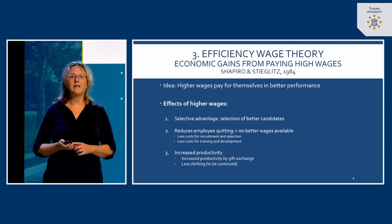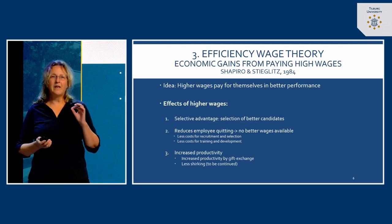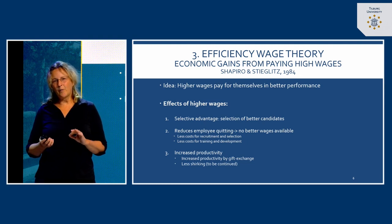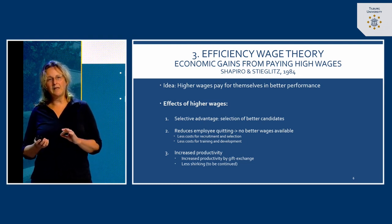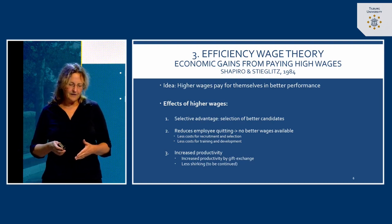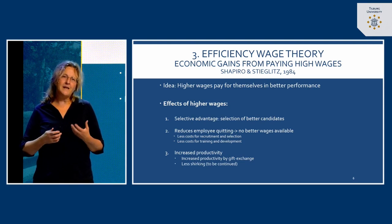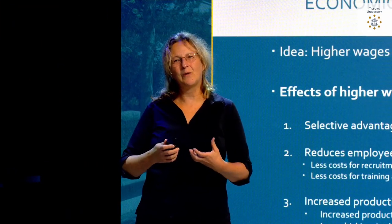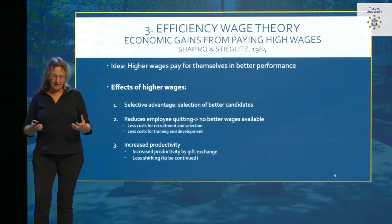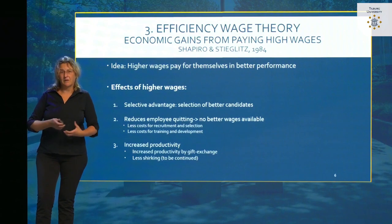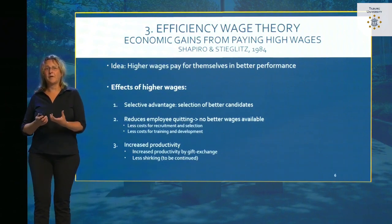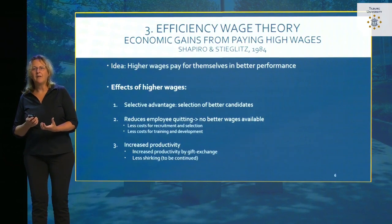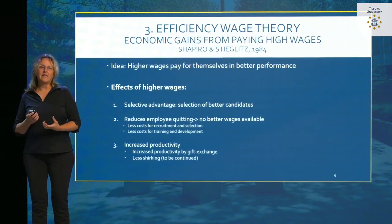Moving on to the next theory: efficiency wage theory, developed by Shapiro and Stiglis in 1984. They started thinking about what frictions and unemployment could mean for individual organizations, reasoning that the fear of being unemployed is a source of motivation that can help organizations be more effective. In essence, if you have the right talent pool — the right human capital — organizations are able to better perform. So what do wages do to end up with the right talent pool?